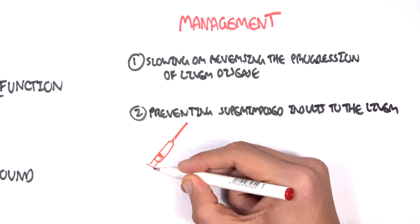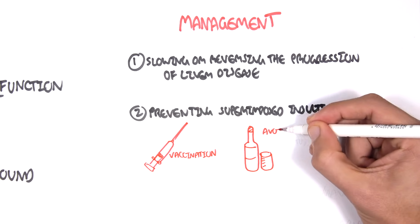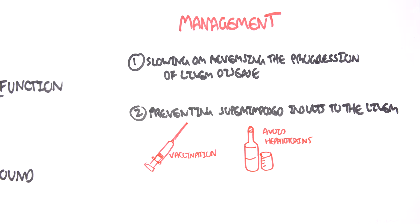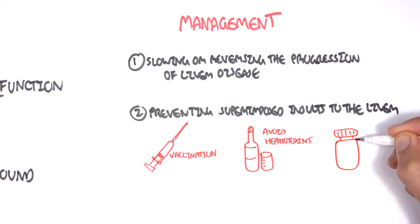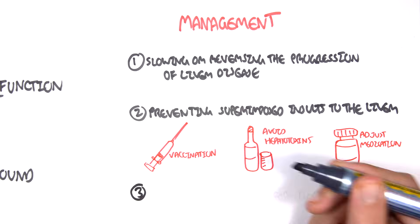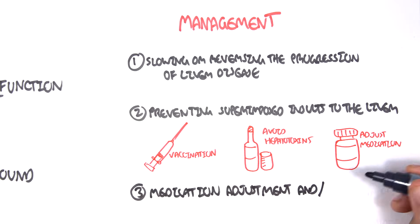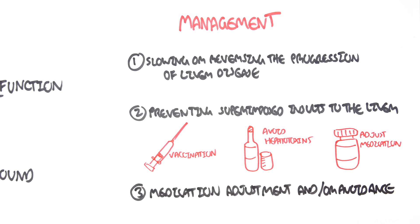Vaccinating in case of liver infections, avoiding hepatotoxins, which include alcohol, which is a main cause of liver cirrhosis, as well as adjusting medications, as certain medications cause the liver to work harder. Medication adjustment and or avoidance is very important.